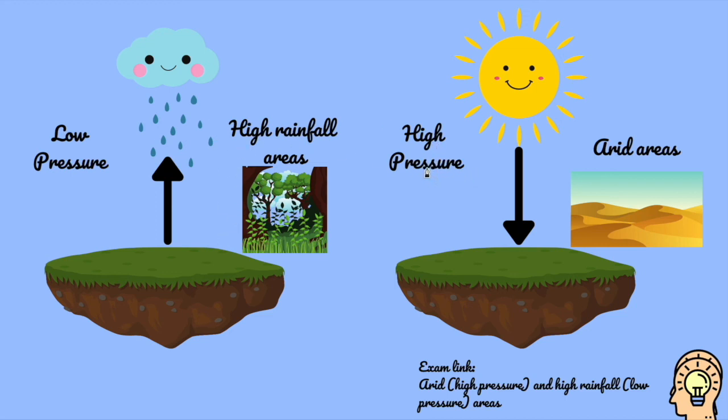Once you're happy and confident with your high and low pressure and the types of weather that is created, feel free to move on to the atmospheric circulation clip, where we are going to look at how this affects the world and the distribution of our tropical rainforests and deserts and other high and low pressure environments globally.